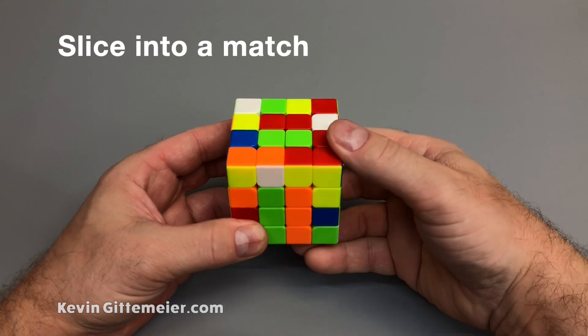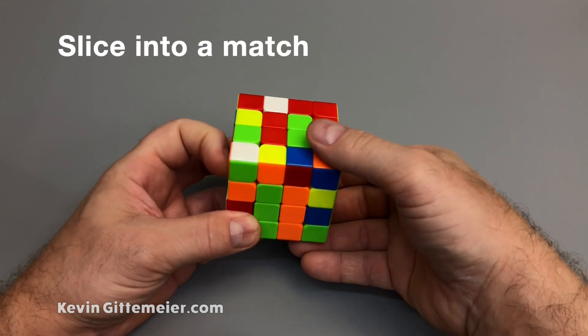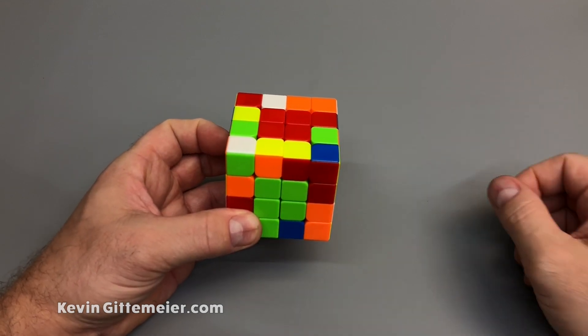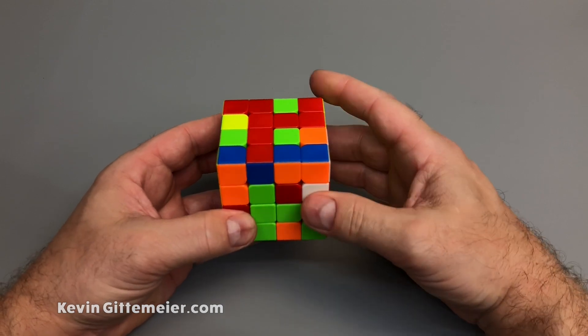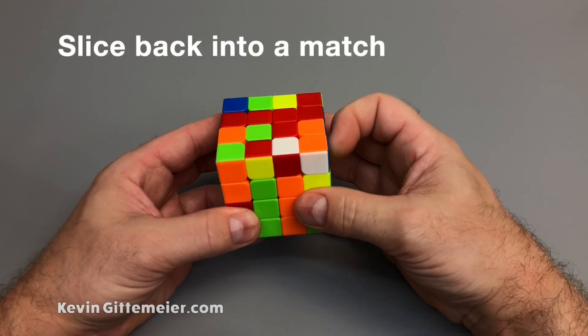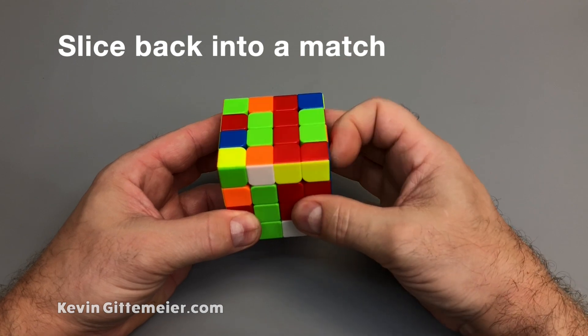Principle one, we slice into a match, forming bars. Principle two, we slice back into a match, forming bars.